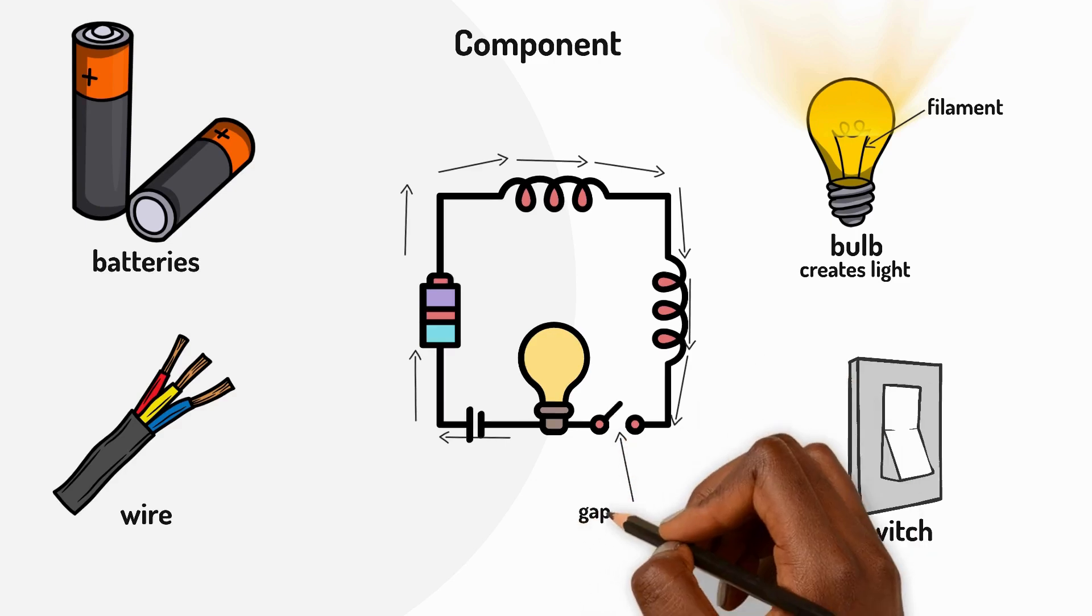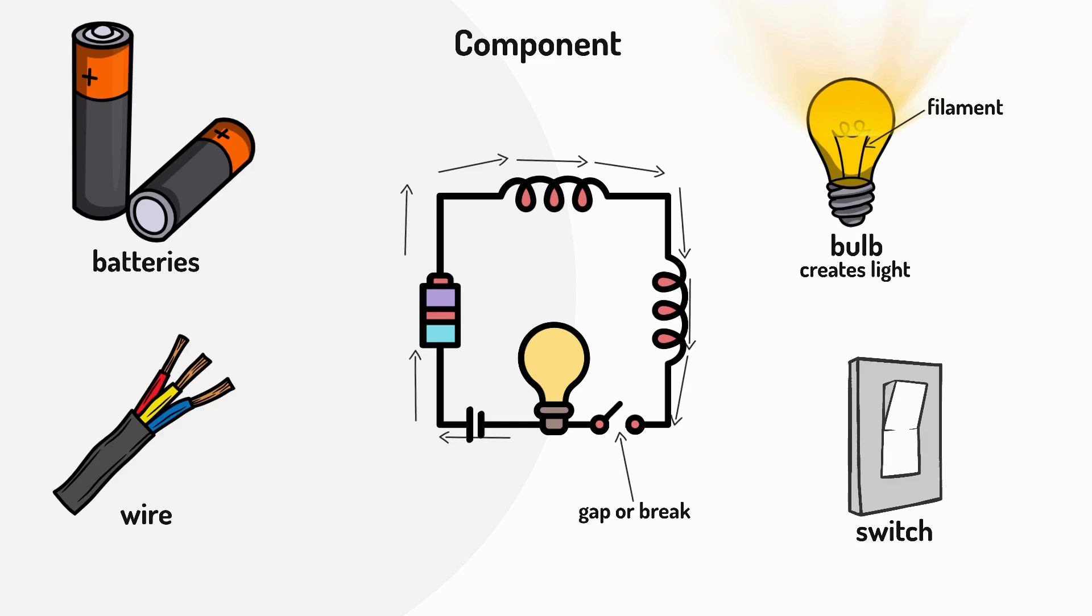If there's a gap or break anywhere in the circuit electricity can't flow. It's like a roadblock. The bulb won't light up because the electricity can't make a complete journey.